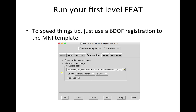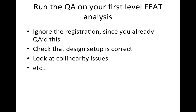Then you run your first-level FEAT almost as usual, but to speed things up — since we're going to overwrite the registration anyway — you can still have it go to standard space but change it to a six degree of freedom image registration, because that will be a little bit quicker. Run that, and then run your QA. Ignore the registration results since you've already checked this separately.